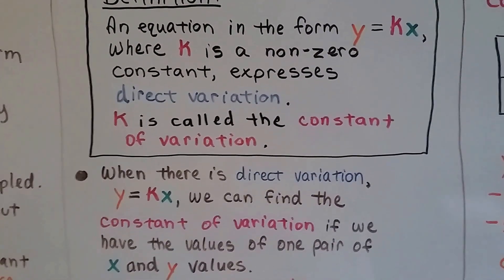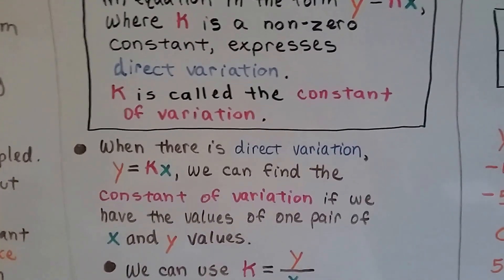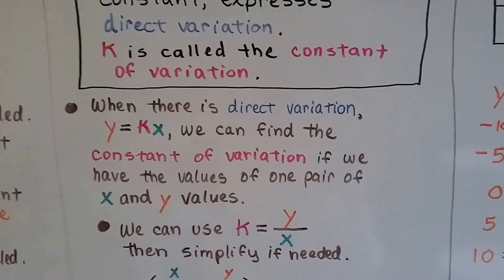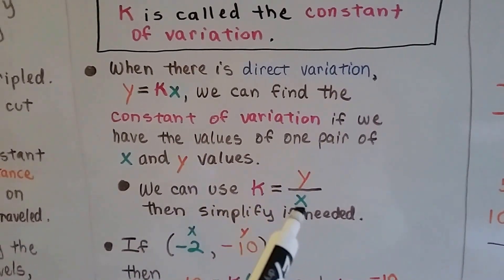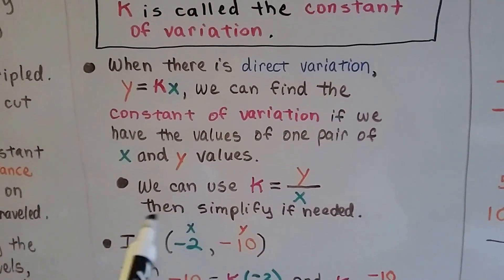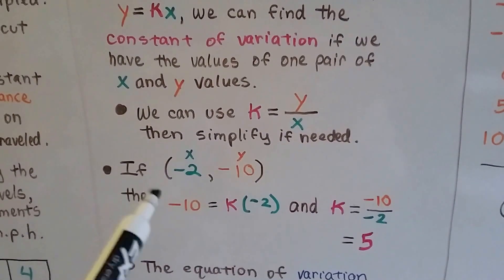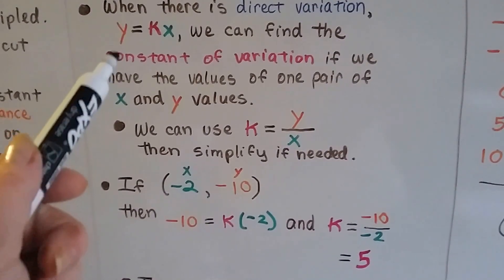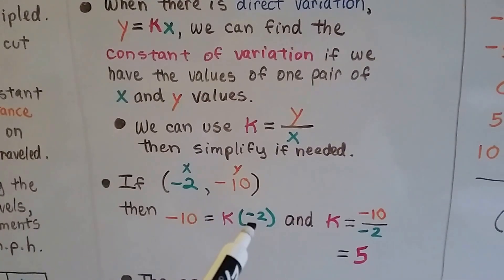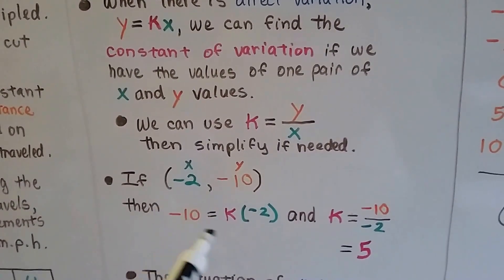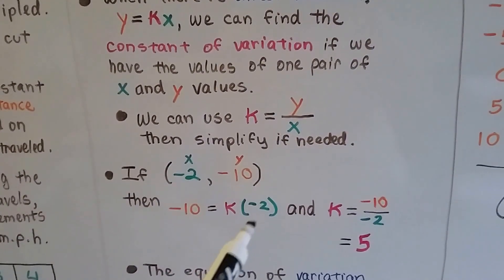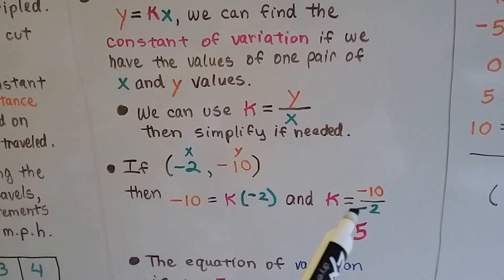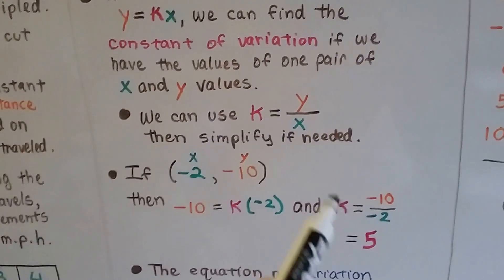When there's a direct variation y equals kx, we can find that k, the constant of variation, if we have the values for one ordered pair of x and y. We use k equals y divided by x. So if we have the ordered pair x equals negative 2, y equals negative 10, we plug it in as negative 10 equals k times negative 2. Using division, negative 10 divided by negative 2 gives us positive 5, so the constant k is 5.